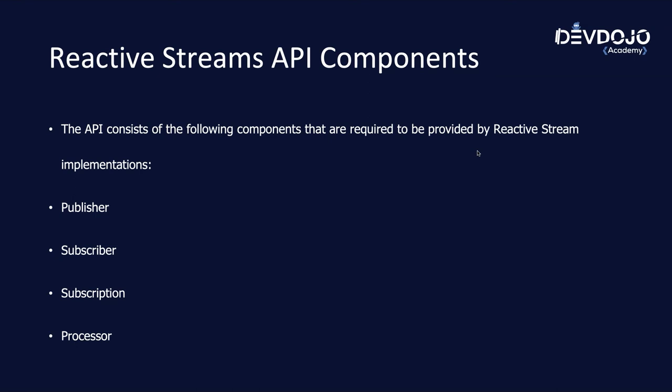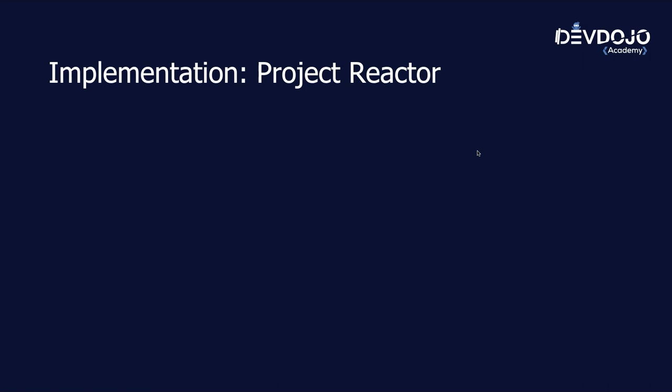This is a bit difficult to understand without code, but once we get down to code it will be easier. We have the APIs and the standard, and we need an implementation — and here we go with Project Reactor. Project Reactor is one of the main implementations of reactive streams. You could also use RxJava, but we are keeping it simple because Spring WebFlux uses Project Reactor by default. In the end, they all have advantages and disadvantages, but that's not the purpose of this training — we are just going to use Project Reactor.